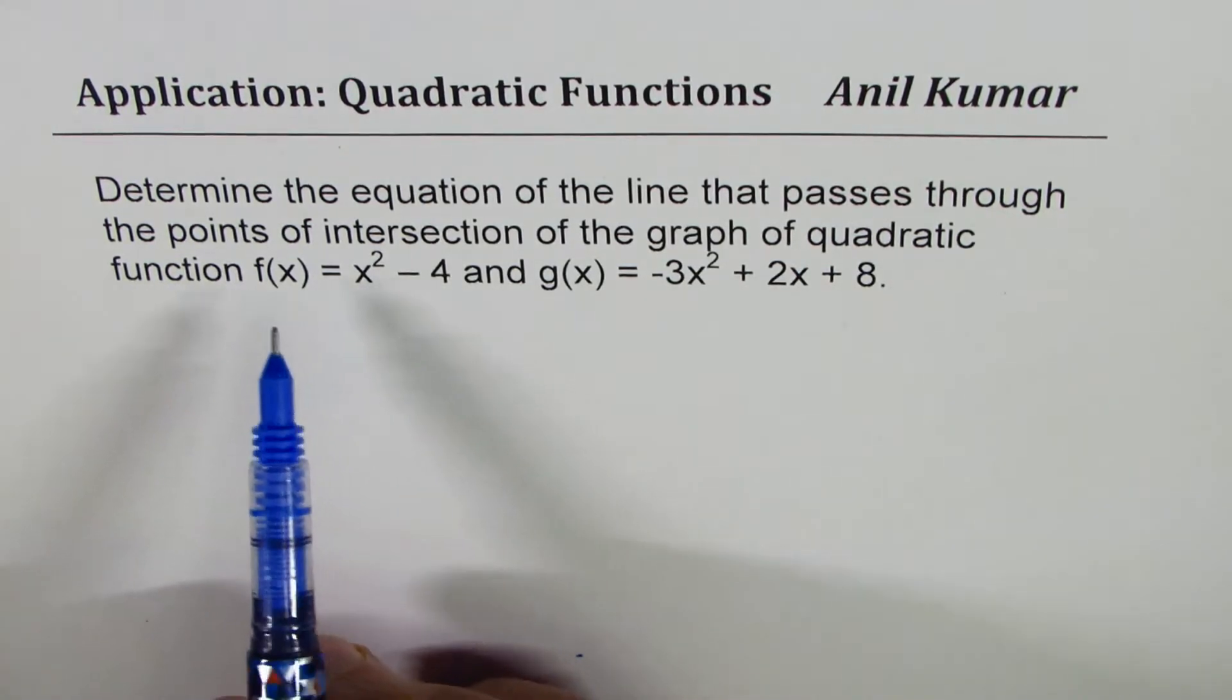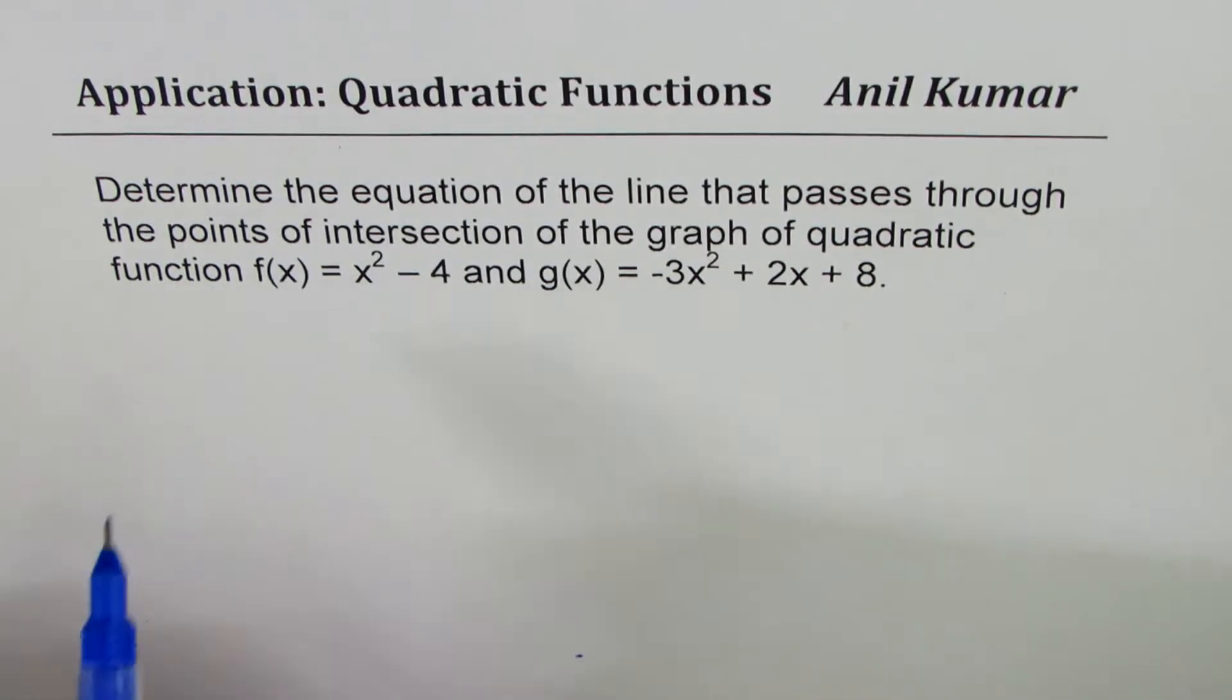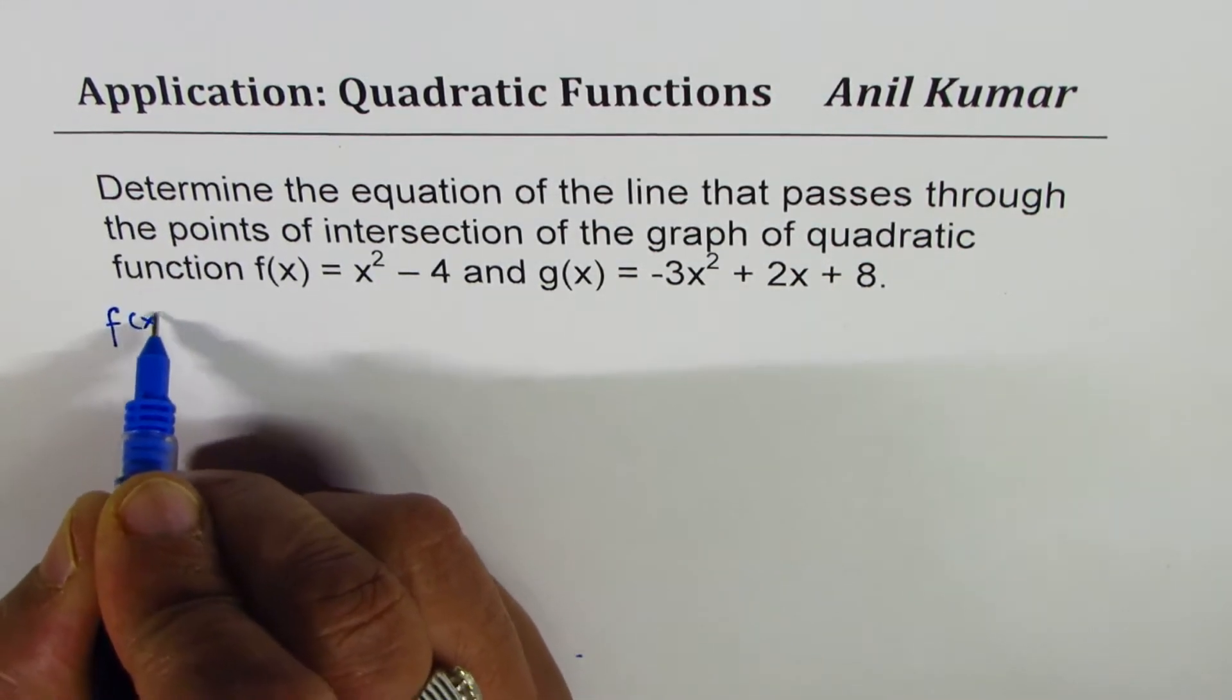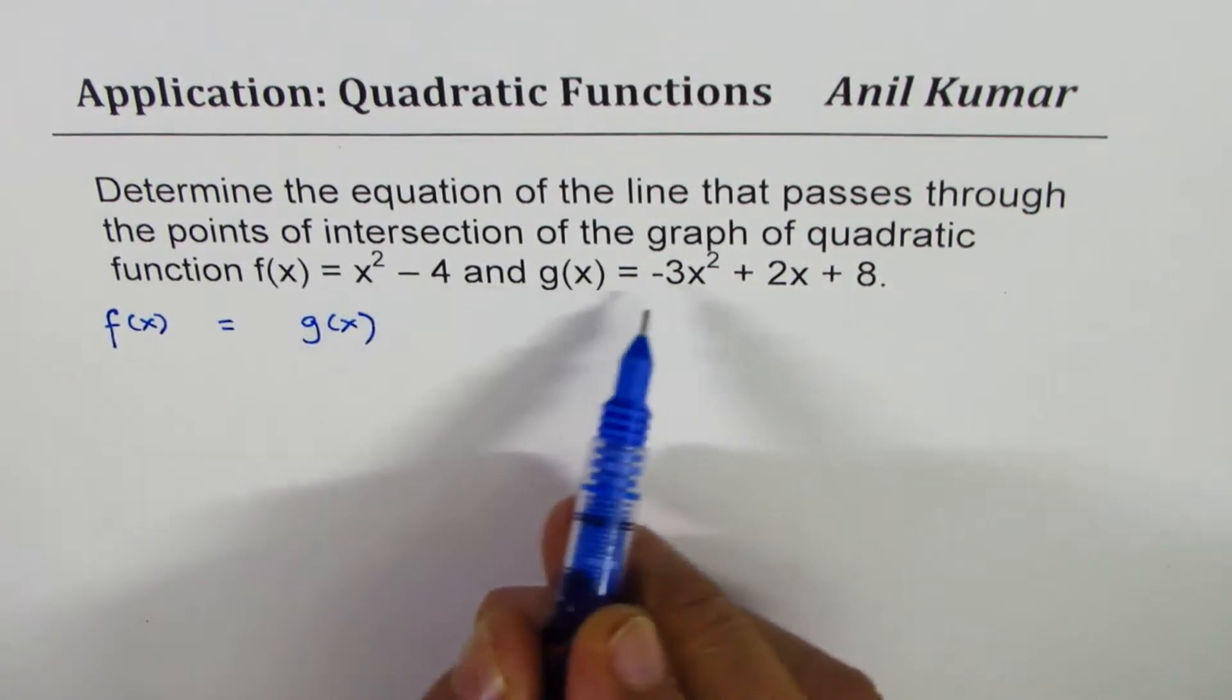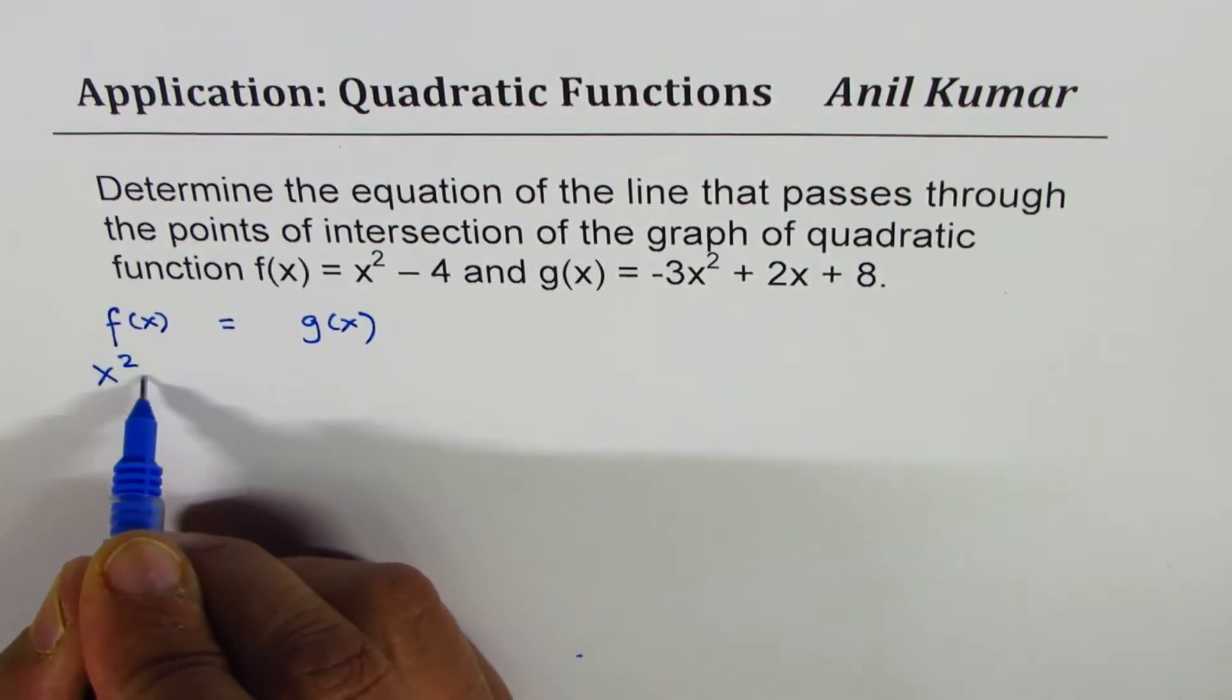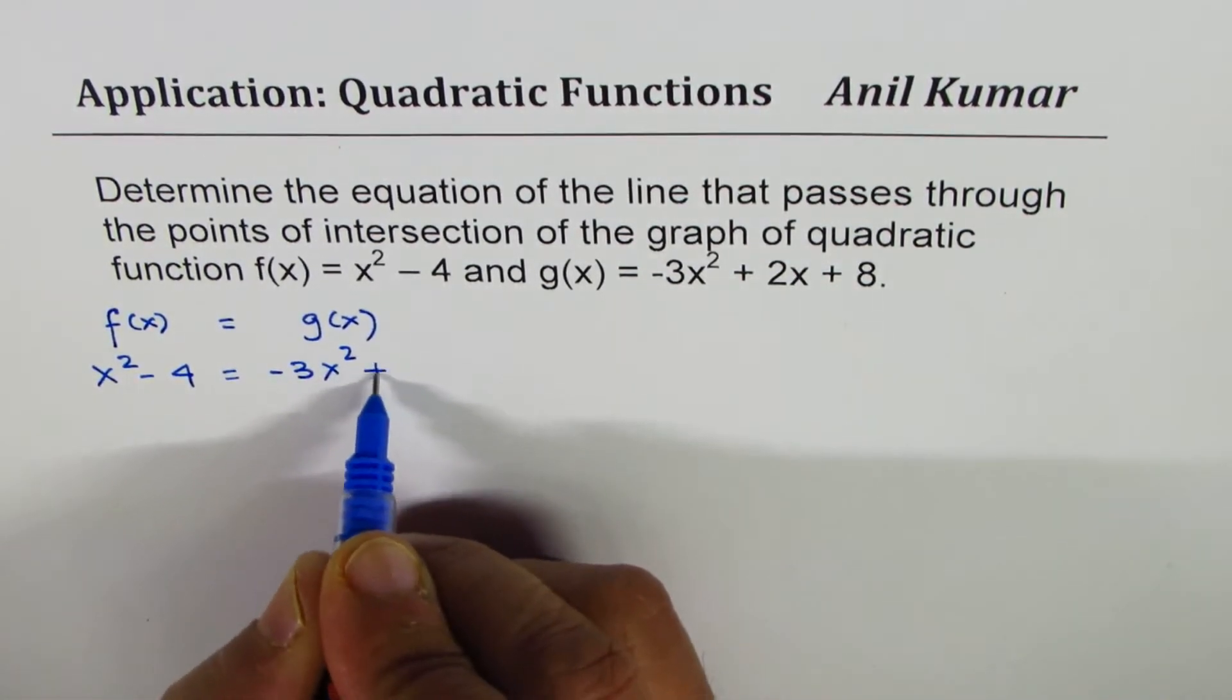To begin with, we have to find the intersection of these two parabolas. Intersection really means a point where f(x) is equal to g(x), so we can equate both these functions and solve for x. We have x² - 4 as f(x) which equals -3x² + 2x + 8.